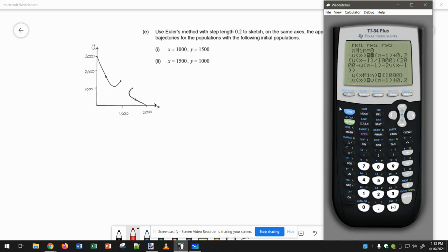All you have to do to find this is on your calculator, change those initial conditions. On mine it says unmin, but I think yours says u0. Change that first one to be 1000, because that's x. And change the second one to be 1500 for y.